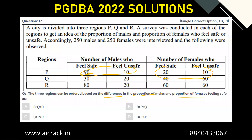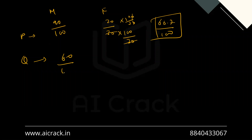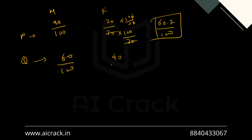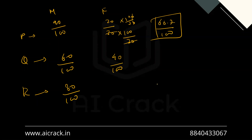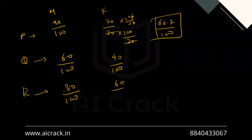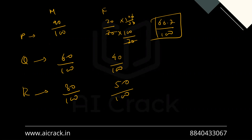In case of region Q, males have 30 out of 50, which is 60 out of 100. For females in Q, we have 40 out of 100 already. For region R, males have 80 out of 100. For females in R, we have 60 out of 120, which is one half, or 50 out of 100. So the difference for P is around 23, for Q the difference is 20, and for R the difference is 30.